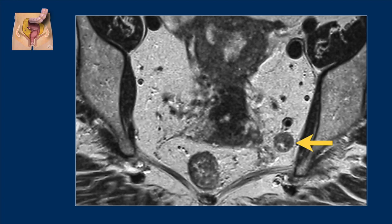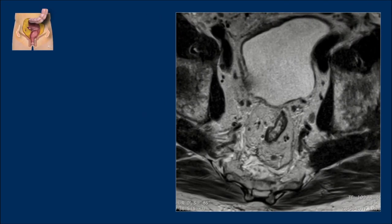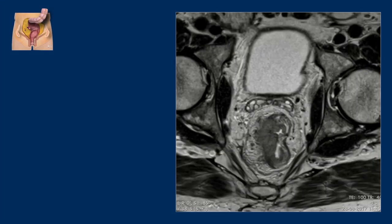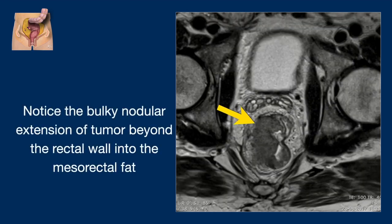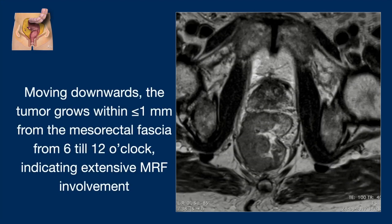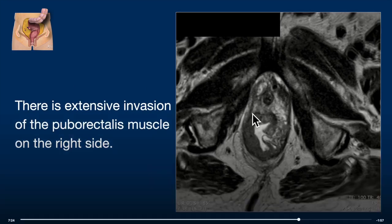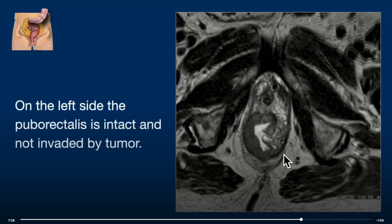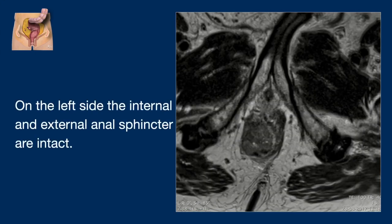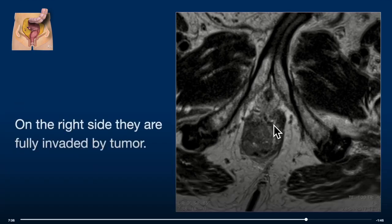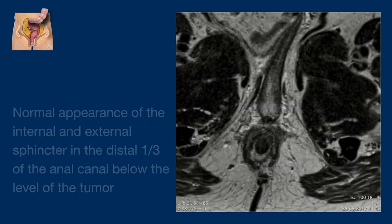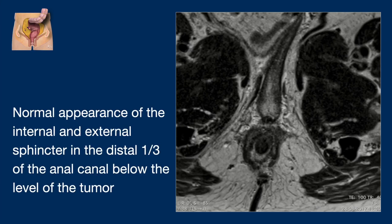Back to our case — on the axial slides at the pelvic floor and anal sphincter, notice the bulky nodular extension of the tumor beyond the rectal wall into the mesorectal fat. Moving downwards, the tumor grows within less than 1 mm from the mesorectal fascia from 6 to 12 o'clock. There is extensive invasion of the puborectalis muscle on the right side, while on the left side it is intact. On the left side the internal and external anal sphincter are intact, while on the right side they are invaded. The internal and external sphincter of the distal third of the anal canal below the level of the tumor appears normal.